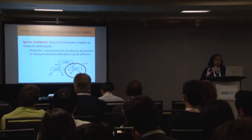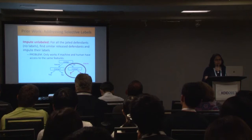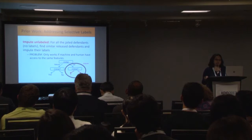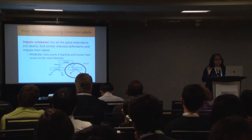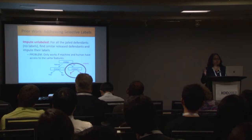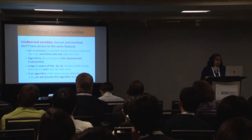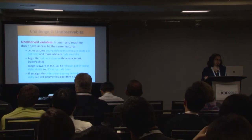There is another approach: impute the unlabeled instances — for jail defendants without labels, find similar labeled people and use their labels as proxies. The problem with this — subtle but important — is that it works only when both human judges and machine algorithms have access to the same features. This also highlights our second problem: the presence of unobservable variables.